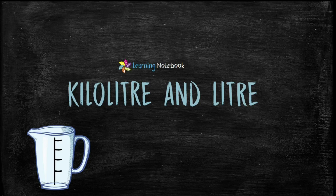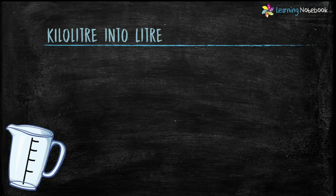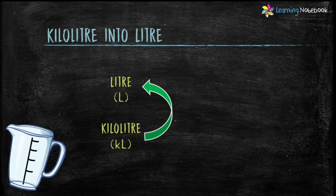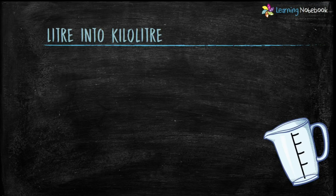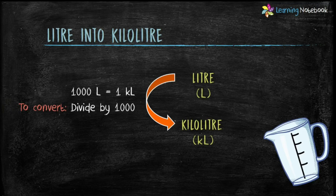Now let's see the relationship between kiloliter and liter. One kiloliter equals one thousand liters, so to convert kiloliter into liter, multiply by one thousand. Conversely, one thousand liters equals one kiloliter, so to convert liter into kiloliter, divide by one thousand.